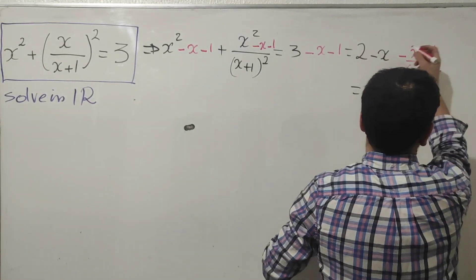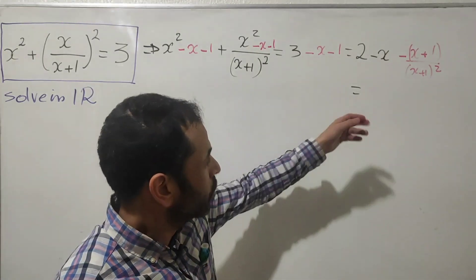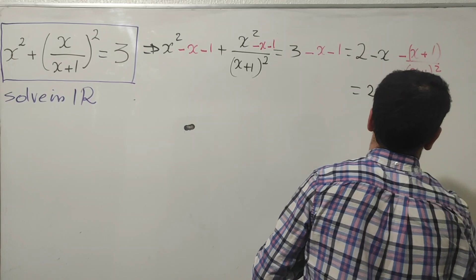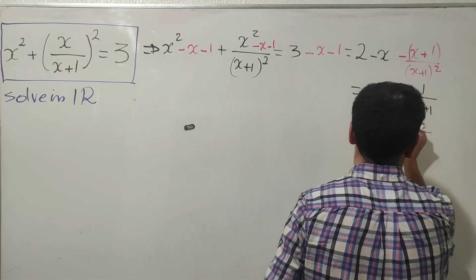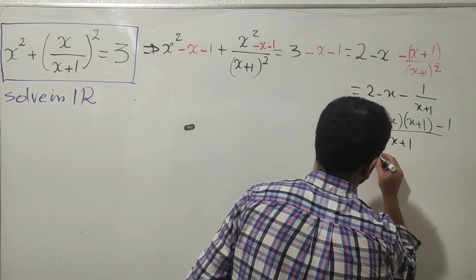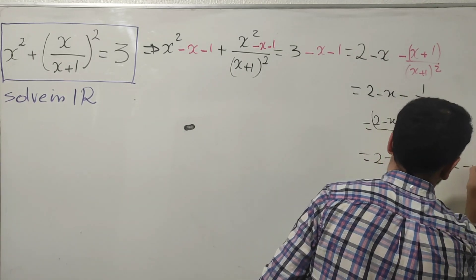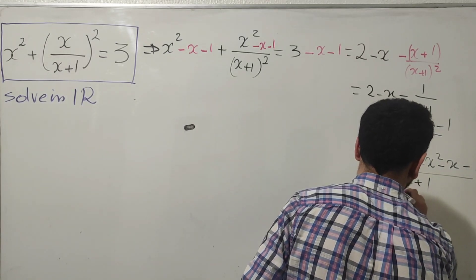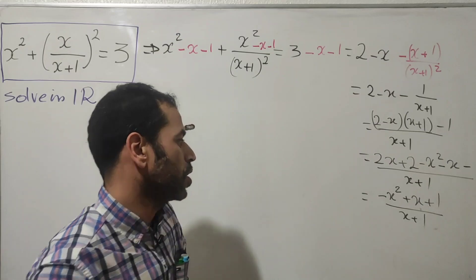Putting the minus sign out, the term becomes plus, and I cancel x plus one squared down to x plus one. So I get two minus x, minus one over x plus one. Putting them over a common denominator of x plus one, I get: two minus x times (x plus one), minus one — all over x plus one. This gives us two x plus two minus x squared minus x minus one, over x plus one.